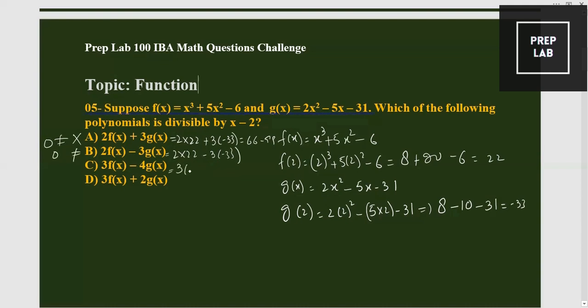And if you try option C: 3 into 22 minus 4 into minus 33, so that will become 66